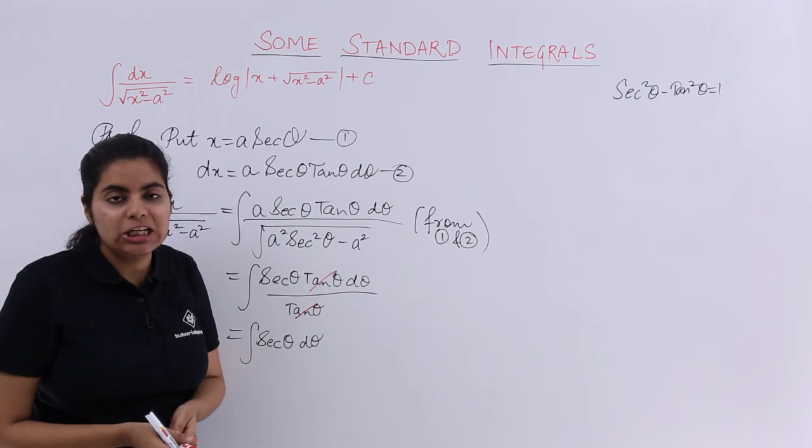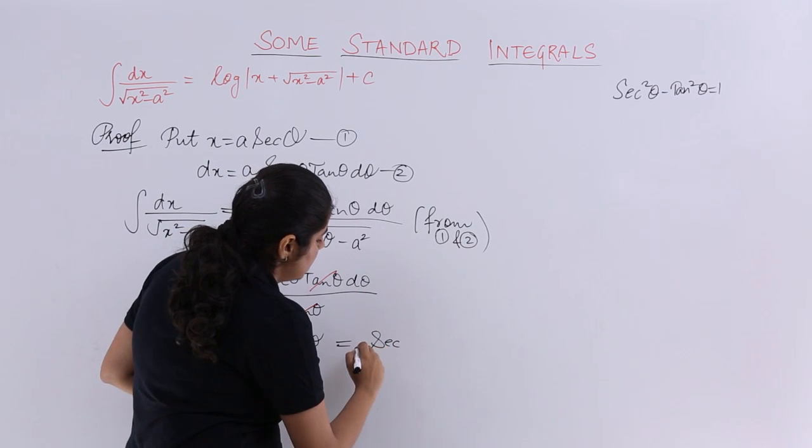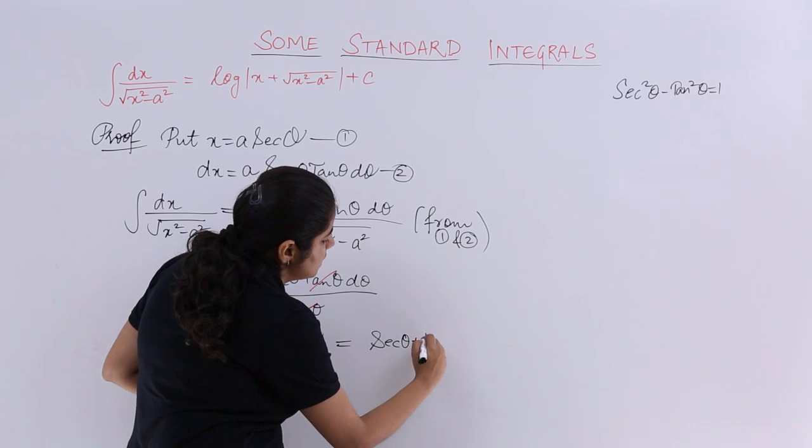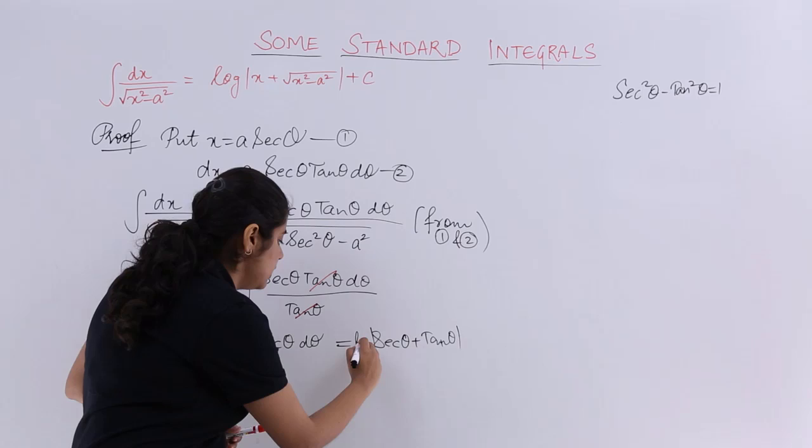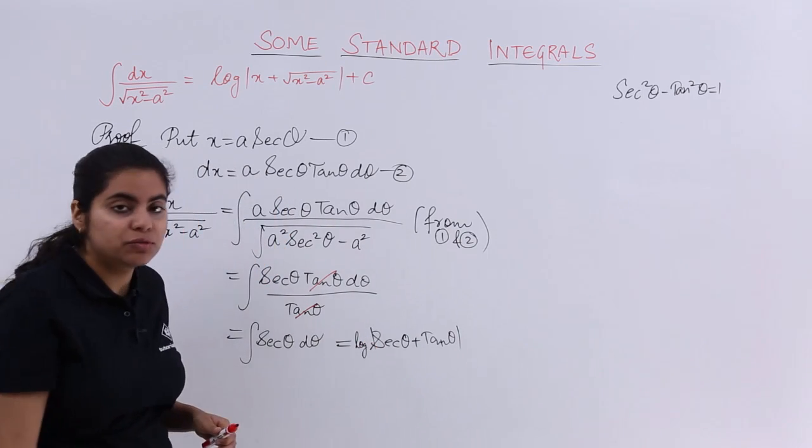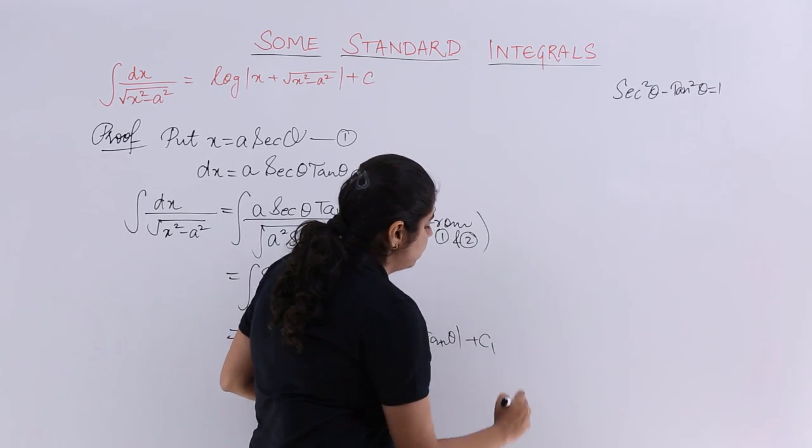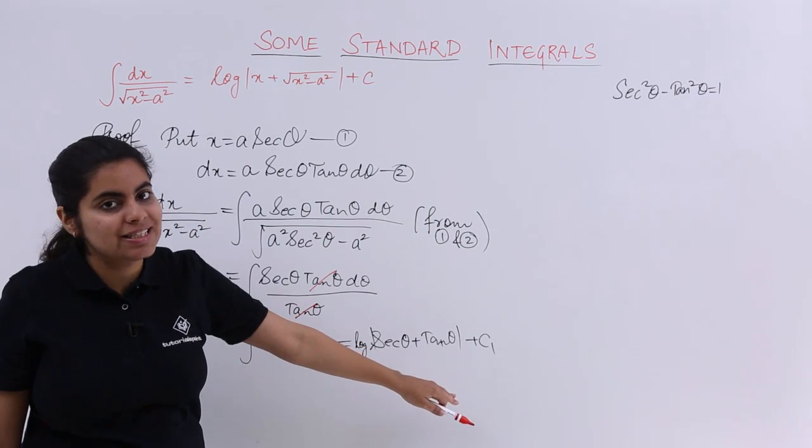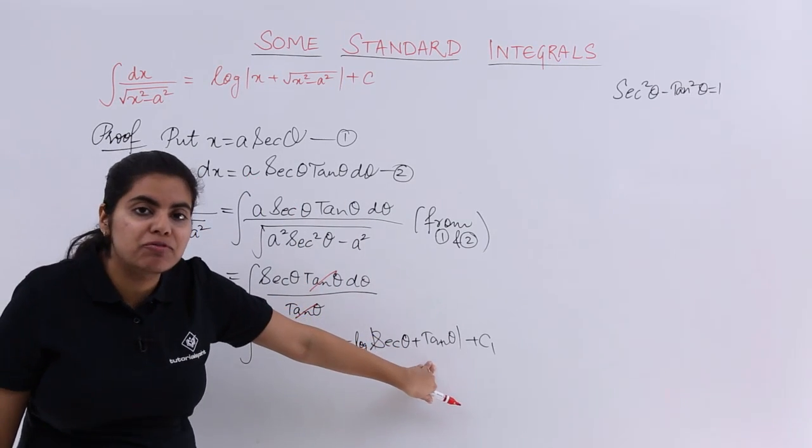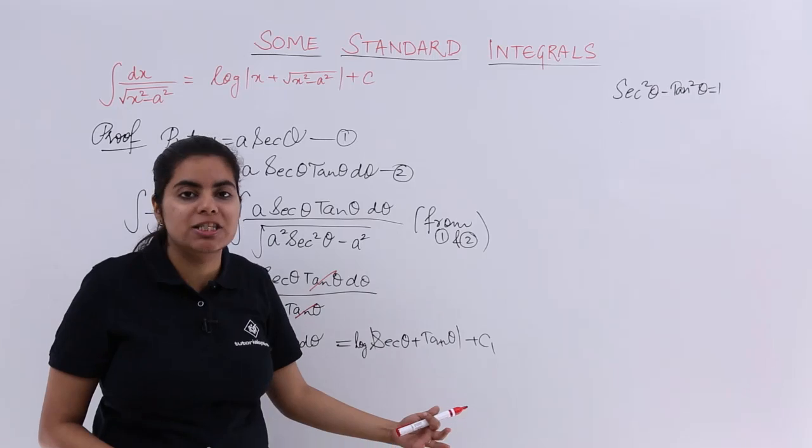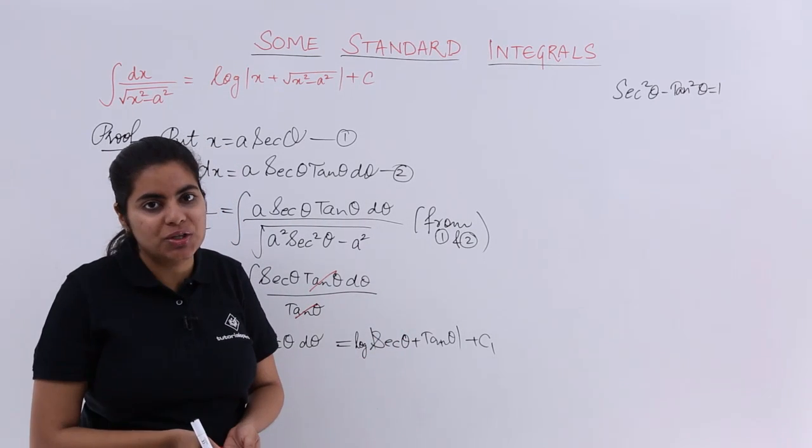Now what is the integral of secant theta? It is nothing but secant theta plus tan theta and that too in what? And that too in log. That is the formula that we started. And since we need to have some constant we will be having one constant of integration which is c1. This is not the final step because the question was in x. We are left with something in theta, so I have used some vague constant of integration, some arbitrary. Later we will be using some other constant of integration.